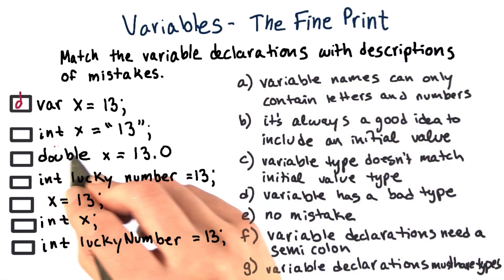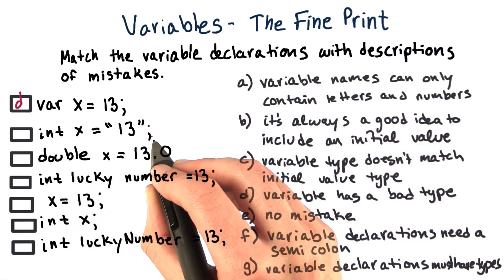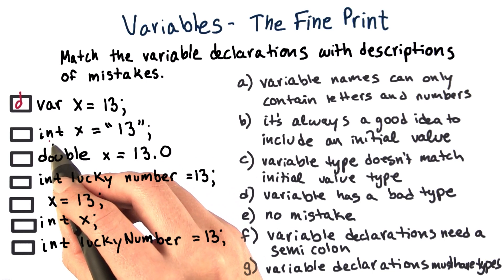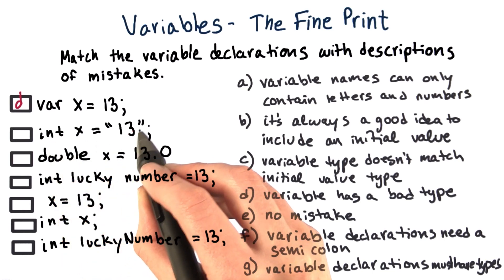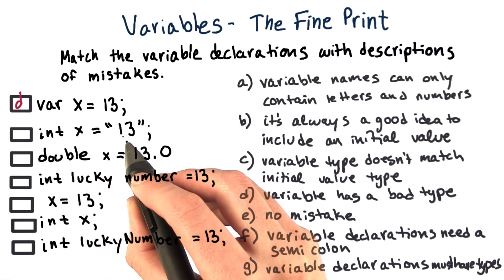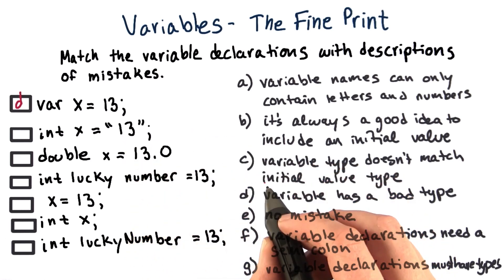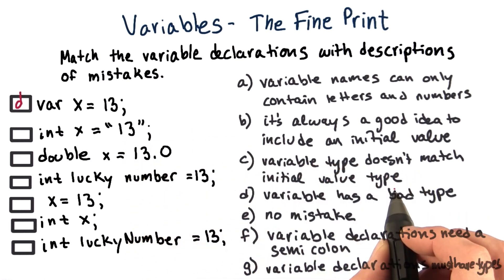Let's look at the next one. Int x equals, in quotation marks, 13. Well, int usually takes a number, and 13 is actually a string, so it looks like these don't match. So the answer is C. The variable type doesn't match the initial value type.